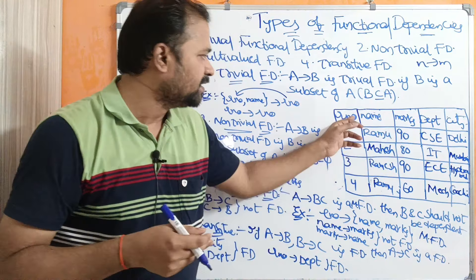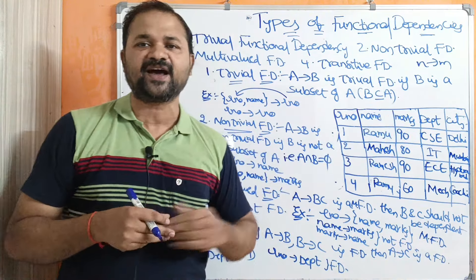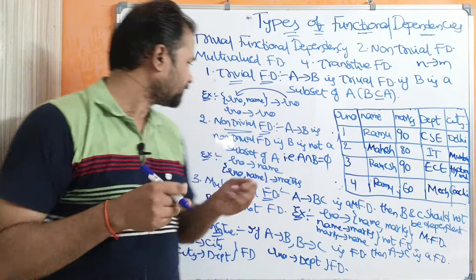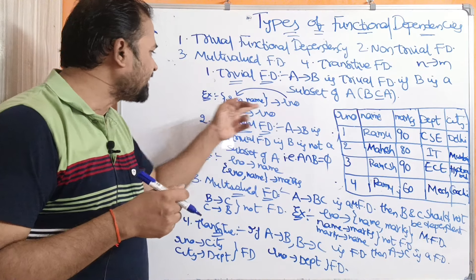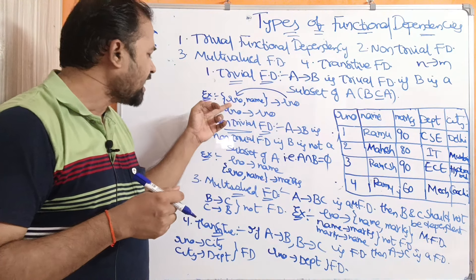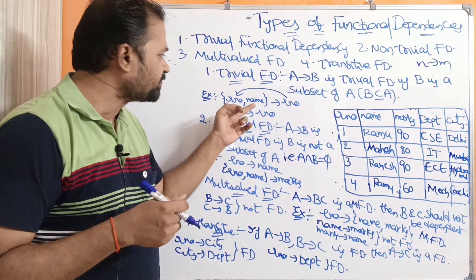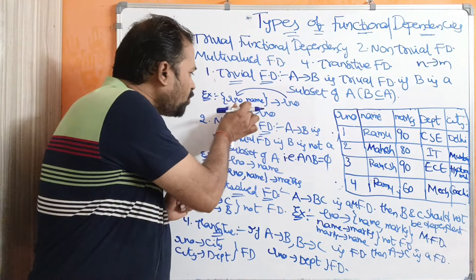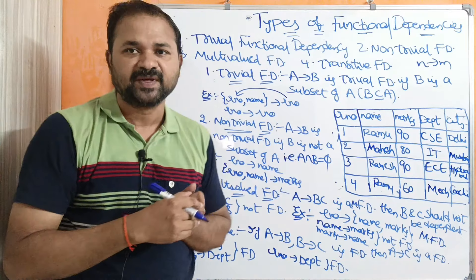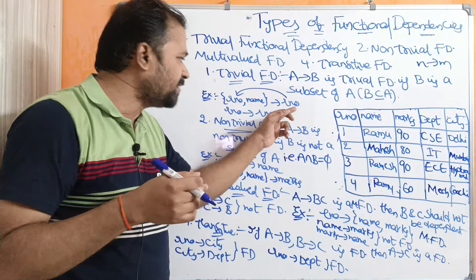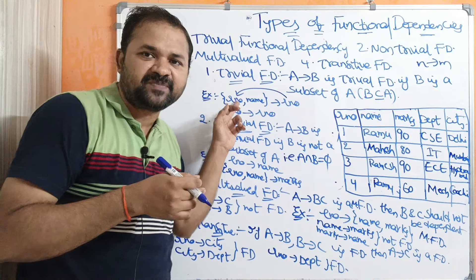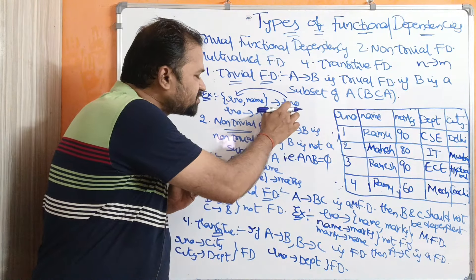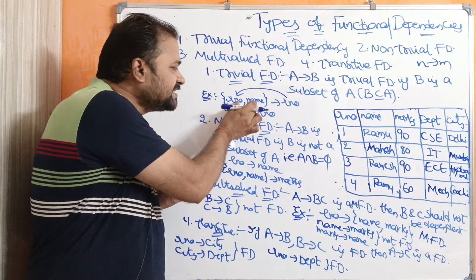Let us take this table. This table has totally five columns: roll number, name, marks, department, and city. Let A contain two attributes — roll number and name — where B means roll number. So, if we know roll number and name, then we can easily determine the roll number, because roll number information is already supplied. So we can say that roll number is a subset of this set.